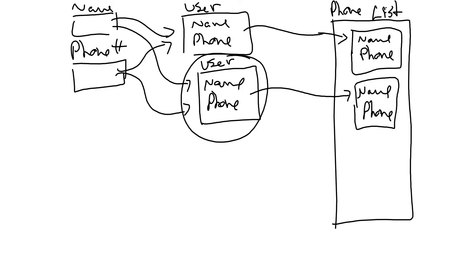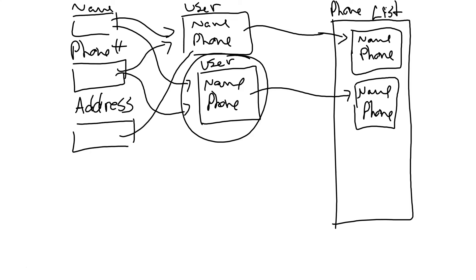You can see that if we wanted to add more information — for example an address — we could add that into the short list as well. So instead of just name and phone number we'd have address as part of those short lists too. This is the start of understanding how to store larger amounts of structured data. Let's look at how it works in Thunkable.